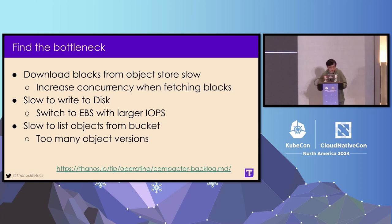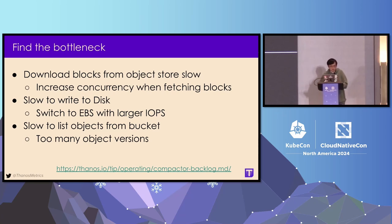The third point is being slow to list objects from your bucket. Compactor does this all the time to understand what blocks exist, which are marked for deletion, and which are marked as no-compact. We found a specific issue with S3: if you turn on object versioning in your S3 bucket, over time the list objects operation becomes very slow because the S3 list API is impacted by the number of object versions in your bucket. What we did was clean up old versions, reduce the retention time for versions, and after that the list operation was much faster.